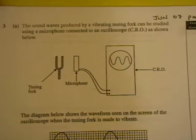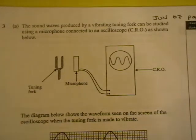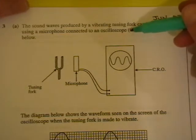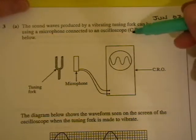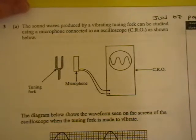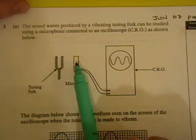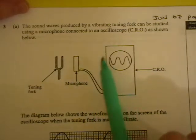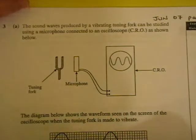The sound waves produced by a vibrating tuning fork can be studied using a microphone connected to an oscilloscope, which in the lab we call a cathode ray oscilloscope, or CRO for short. It's shown below. So the tuning fork struck here, the sound hits the microphone, and then it's displayed as a voltage on the cathode ray oscilloscope.